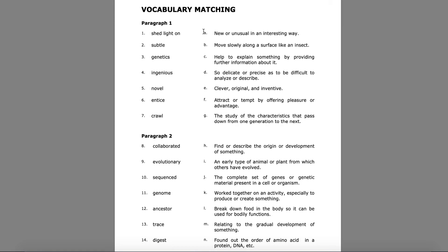A: new or unusual in an interesting way. B: move slowly along a surface like an insect. C: help to explain something by providing further information about it. D: so delicate or precise as to be difficult to analyze or describe. E: clever, original, and inventive. F: attract or tempt by offering pleasure or advantage. G: the study of the characteristics that pass down from one generation to the next.